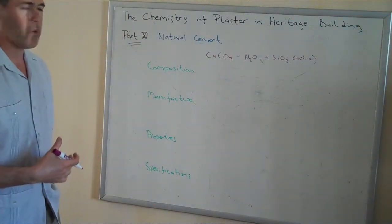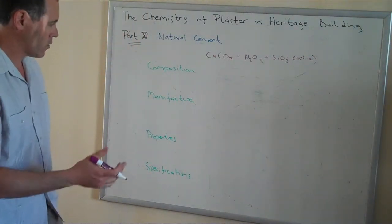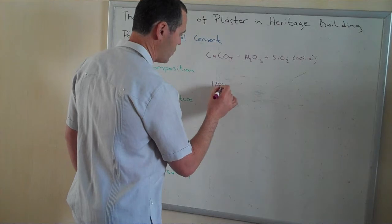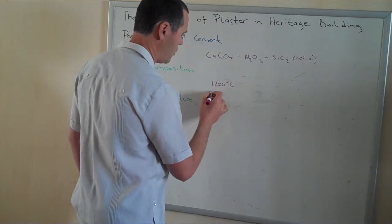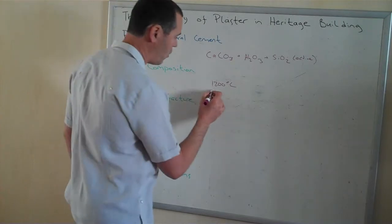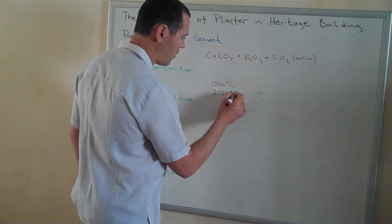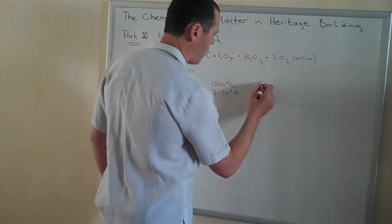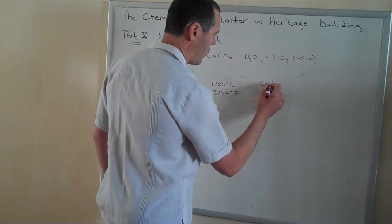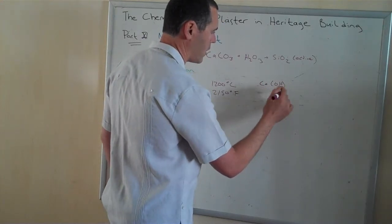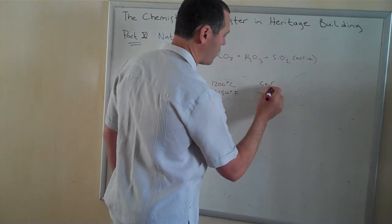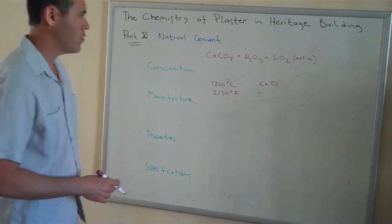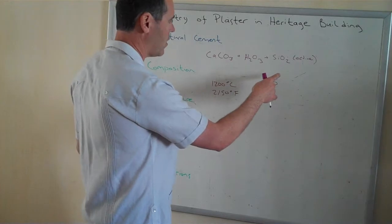During the process of manufacture, we are going to heat to a pretty high temperature — 1200 degrees Celsius, which is approximately 2150 degrees Fahrenheit. And what that produces is, as before, we have some measure of free calcium oxides — free lime, quick lime — but not as much as before, because now it's combining both with the silica and the alumina.